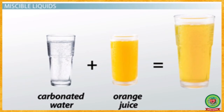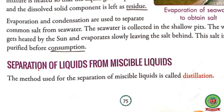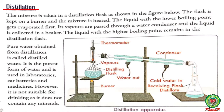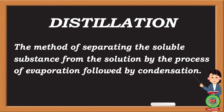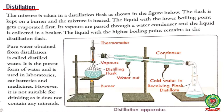the liquids that can mix completely with each other. The method used for separation of miscible liquids is distillation. The definition of distillation is: the method of separating the soluble substance from the solution by the process of evaporation followed by condensation.